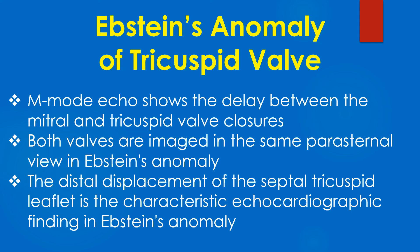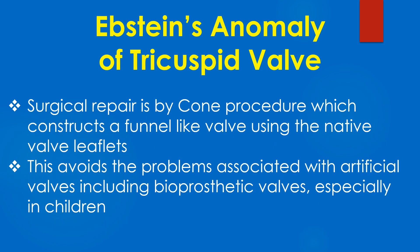The distal displacement of the septal tricuspid leaflet is the characteristic echocardiographic finding in Ebstein's anomaly, noted in the apical four-chamber view. Surgical repair is by da Silva's cone procedure, which constructs a funnel-like valve using the native valve leaflets, avoiding the problems associated with artificial valves including bioprosthetic valves, especially in children.